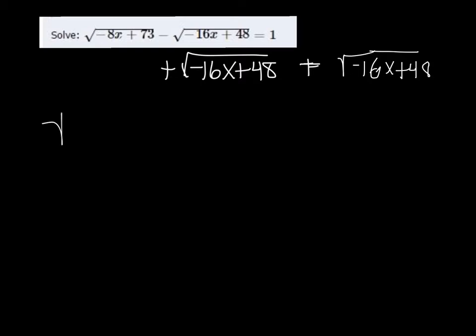So what we have is the square root of negative 8x plus 73 is equal to 1 plus the square root of negative 16x plus 48.